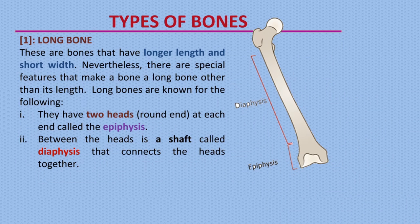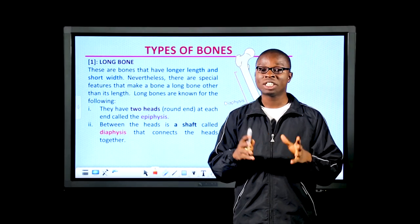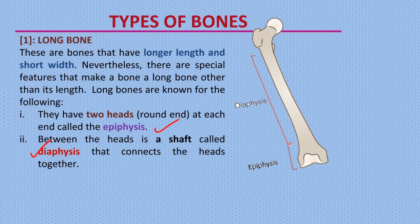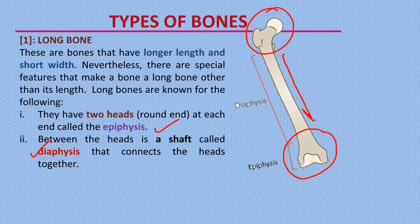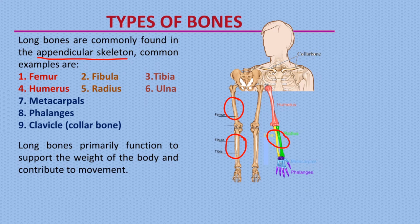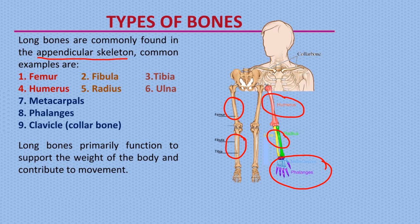Long bones are bones with longer length and shorter width. Special features that make a bone a long bone — irrespective of its length — are the presence of an epiphysis and a diaphysis. The epiphysis is the two rounded ends of the bone, and in between is the diaphysis, also called the shaft, which determines the length of the bone. Long bones are commonly found in the appendicular skeleton. Examples include the femur (thigh bone), fibula and tibia (lower leg), radius and ulna (lower arm), metacarpus and phalanges (hand bones), humerus (upper arm), and the clavicle (collar bone). Long bones primarily function to support body weight and contribute to movement.